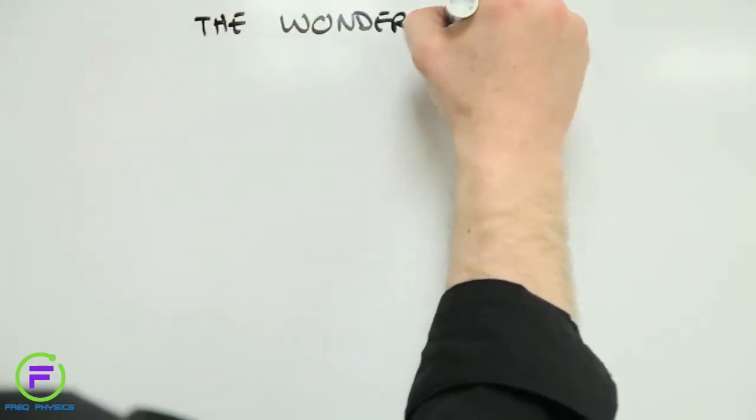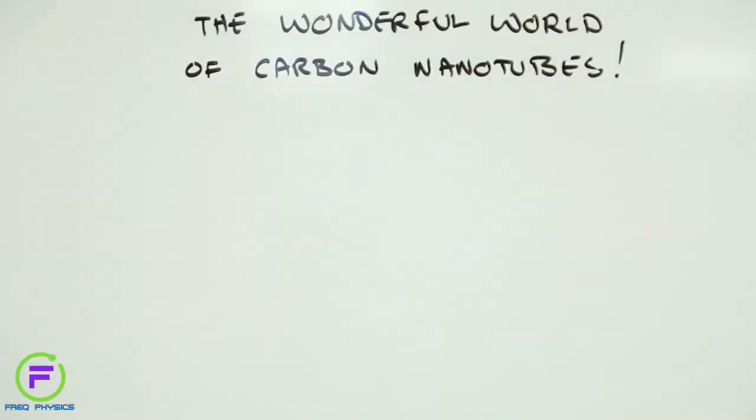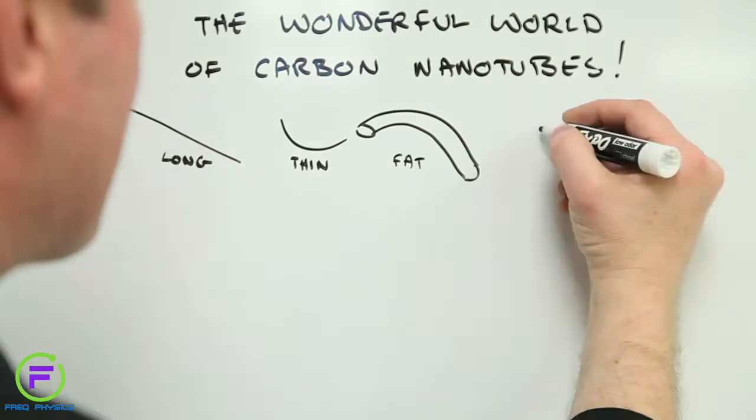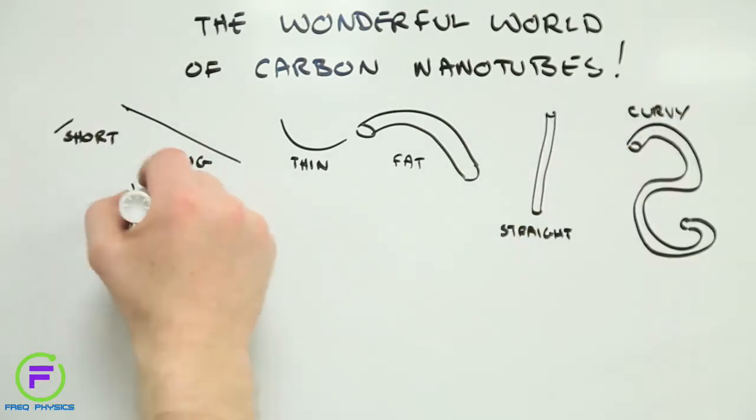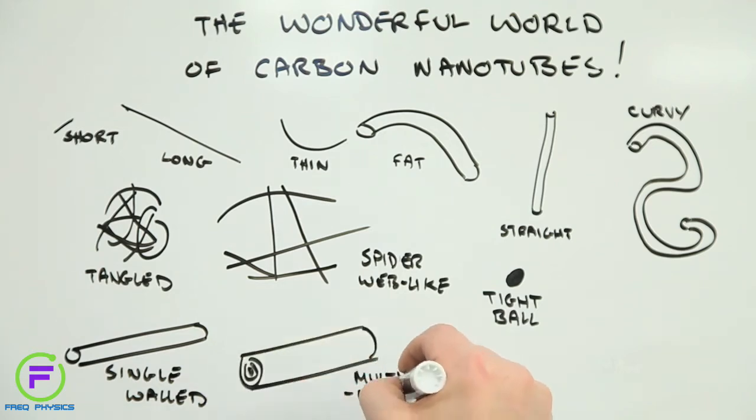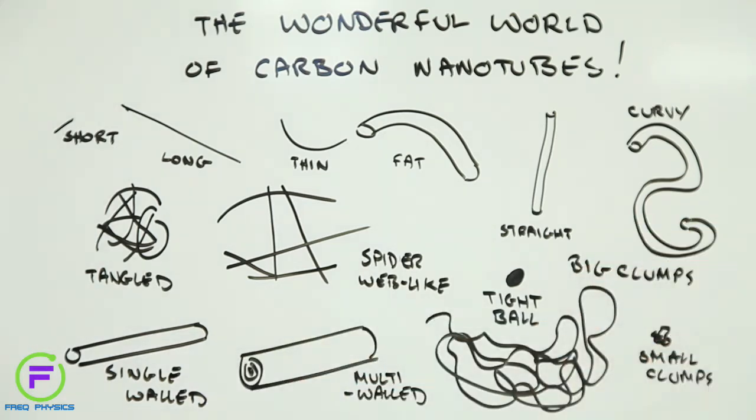The trouble is carbon nanotubes are not just carbon nanotubes. They might be short, long, thin, fat, straight, curvy, tangled, spiderweb-like, bunched up in a tight ball, single-walled, multi-walled, big clumps, small clumps, or almost any combination of the above.